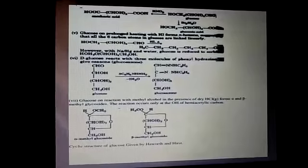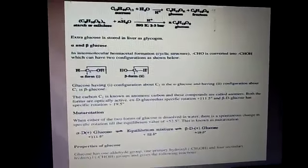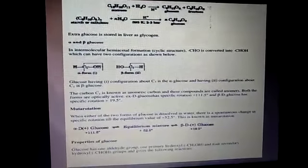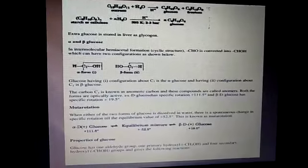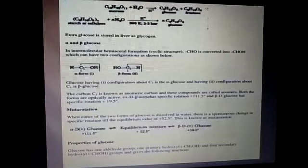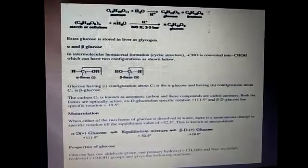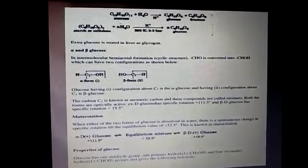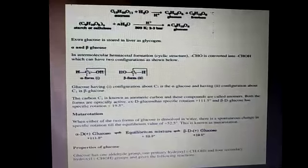Glucose reacts with 3 molecules of phenylhydrazine to give an osazone or glucosazone. Glucose, on reaction with methyl alcohol in the presence of dry HCl, forms alpha and beta-methyl glycoside. This reaction occurs only at the OH group of the hemiacetal carbon. The cyclic structure of glucose was given by Haworth.